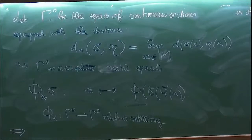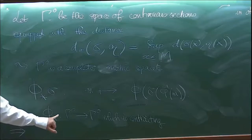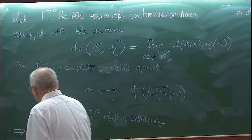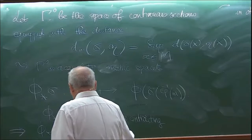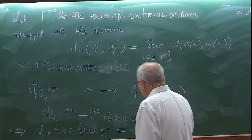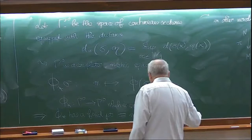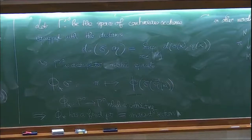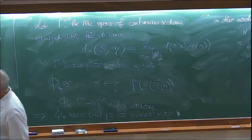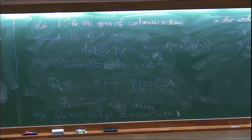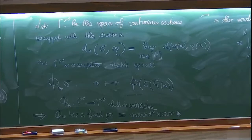Assuming M is compact, the map phi-star is contracting, so it has a fixed point by Banach's theorem. And a fixed point of phi-star is exactly equal to an invariant section of phi. The previous theorem was just the special case where M is a point, you have a self-map of the fiber, and the section is just a point in the fiber.